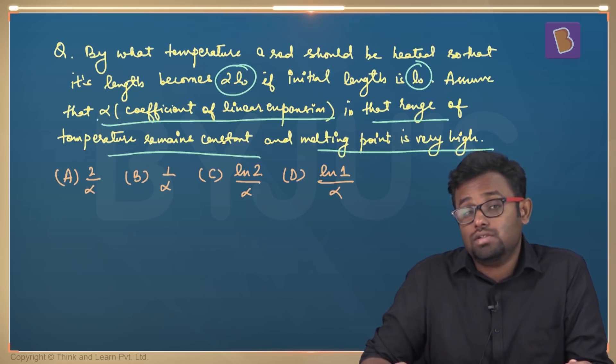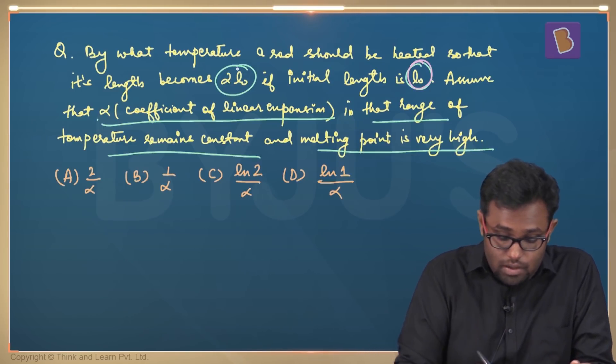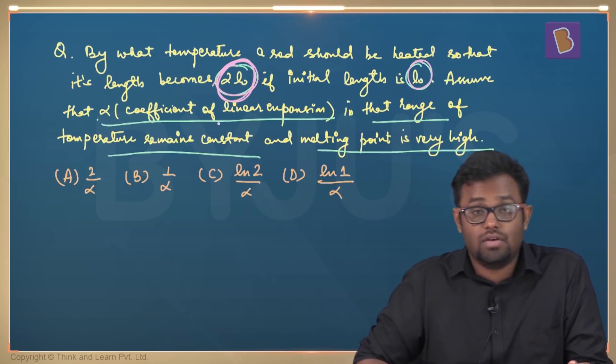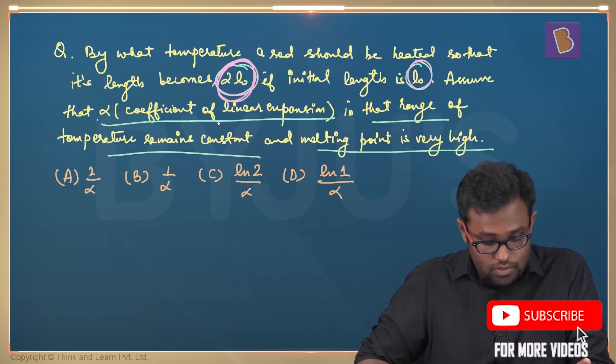Even if alpha remains constant, you look at this problem, it says that the length of something has doubled, which is a very, very high increase in length because of heat.